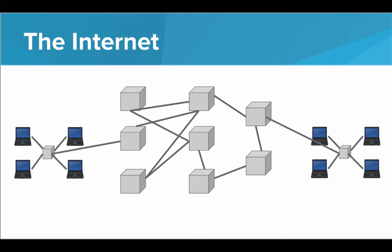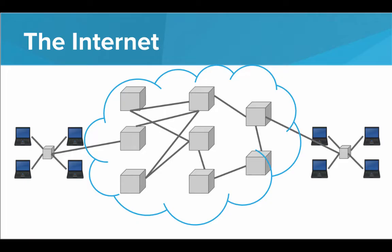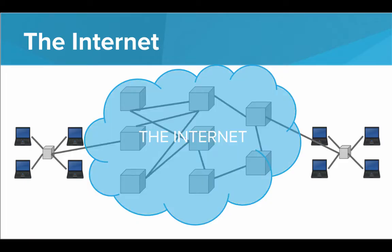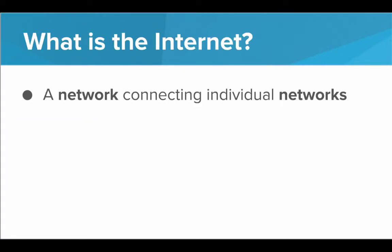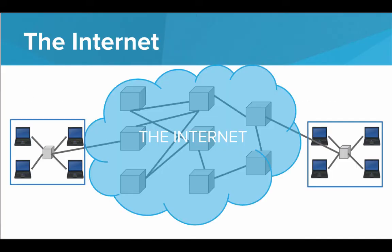And so these routers that the individual networks connect to are provided by an internet service provider, someone like Comcast or AT&T. Now we don't really have to worry about what's going on inside this crazy network of routers. Right now we're only worried about how data is being transmitted in the individual networks. So let's just abstract all that away, call it the internet, and know that it's a massive network connecting these individual simple networks. That's what we mean when we say the internet is a network connecting individual networks, a big network of routers with endpoints you can connect to.